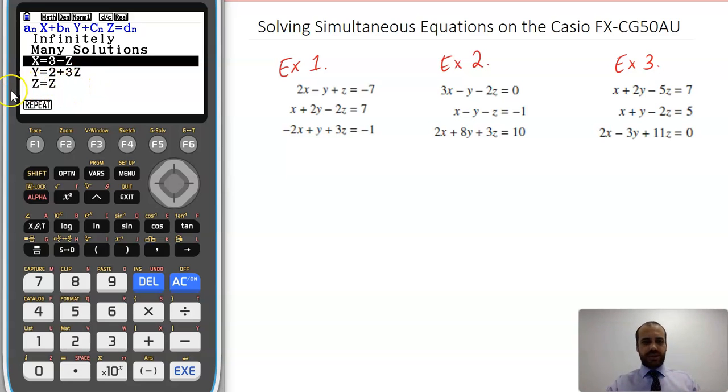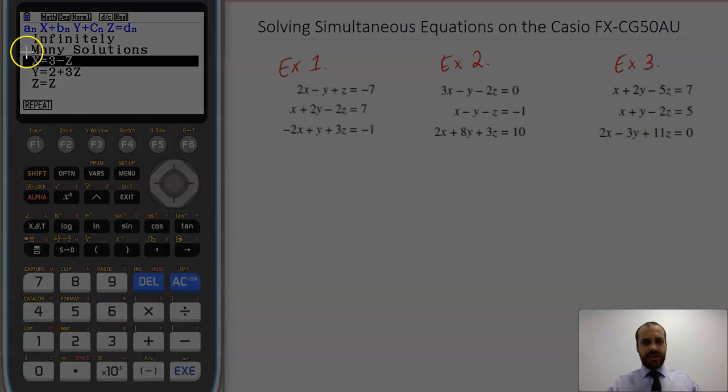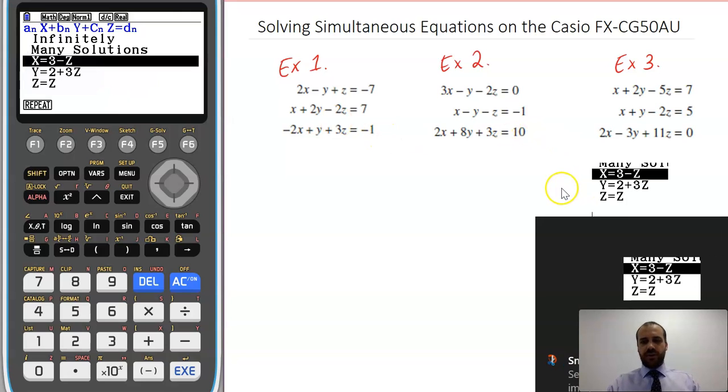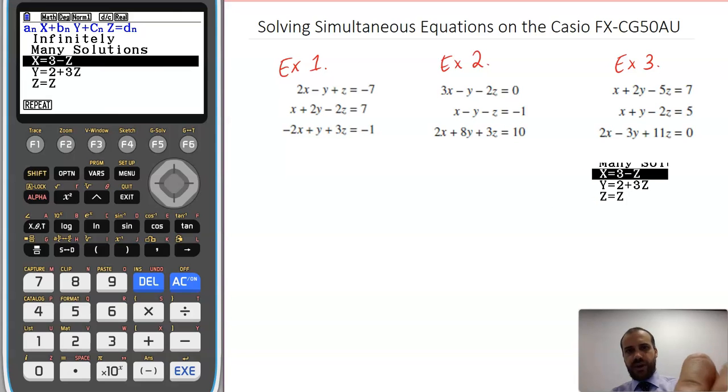Now, we'd write this a little bit differently, so I'm just going to copy and paste that, and put it in here, and then I'm going to write it for you how I would write it. All right, so if I'm writing this, I'm writing z equals, not z, but z equals lambda.